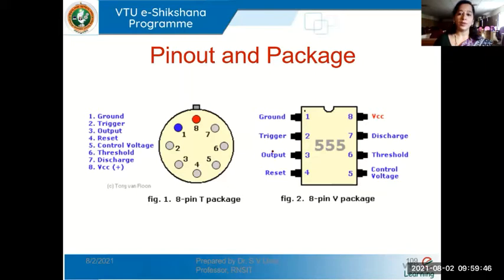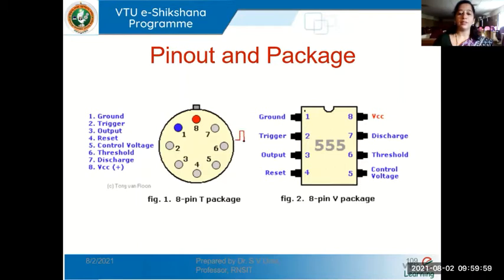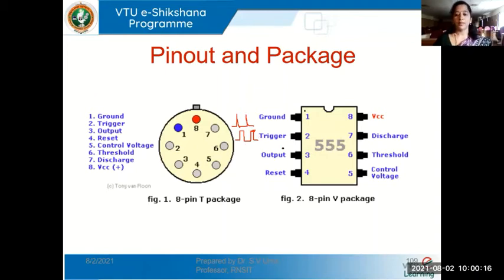The trigger input at pin 2 is used so that the output can change states. If we want the output to change from one state to another, it is done with the help of an external trigger input, which can be in the form of a square wave, pulses, or impulses of small width. Pin 3 is where we check the output — the output will be available at pin 3.